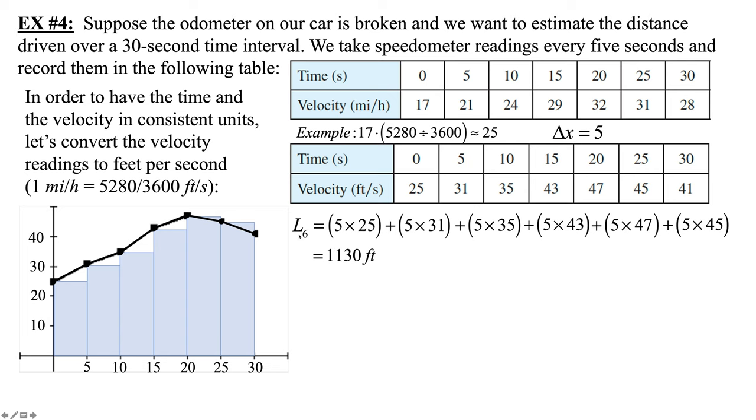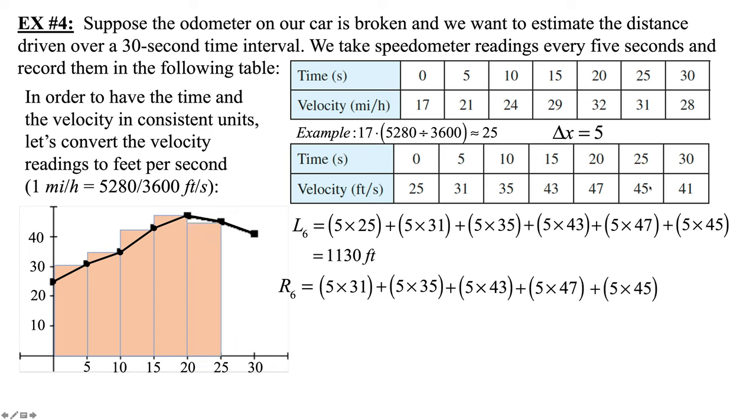If we go R sub 6, let's do a right upper endpoint. Now we're going to use the last 6 values. Our first rectangle in the upper right-hand corner will have the 5 on the graph. So 5 times 31 plus 5 times 35 plus 5 times 43 plus 5 times 47 plus 5 times 45 plus 5 times 41. So you should see a trend here.